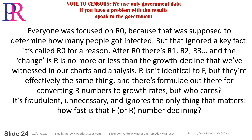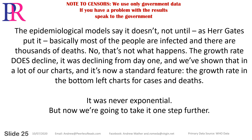Everyone was focused on R0 because that was supposed to determine how many people got infected. But that ignored a key fact: it's called R0 for a reason. After R0, there's R1, R2, R3. The change in R is no more or less than the growth decline we've witnessed in our charts. R isn't identical to F, but they're effectively the same thing. The epidemiological models say the rate doesn't decline — not until most people are infected and there are thousands of deaths. That's not what happens. The growth rate does decline. It was declining from day one, and it's now a standard feature in our charts.